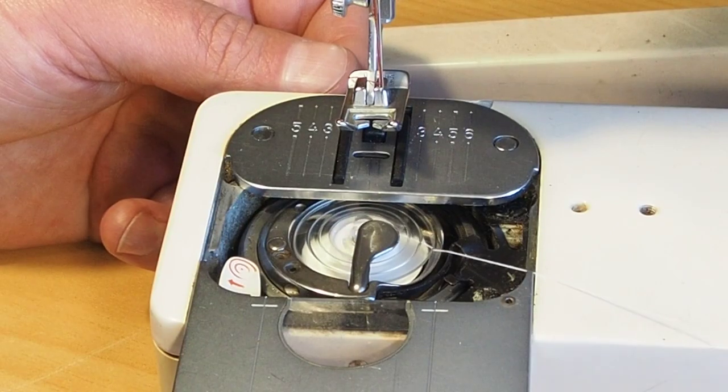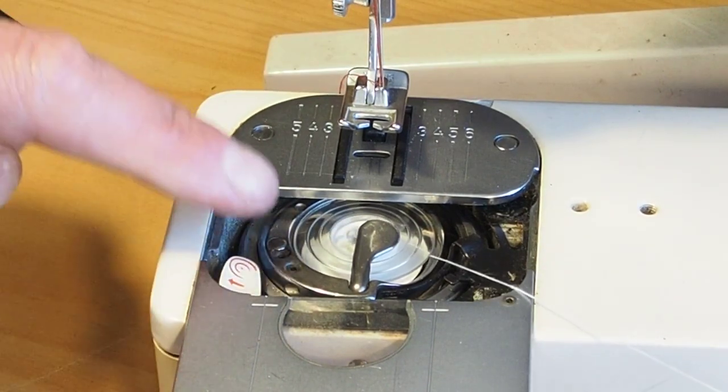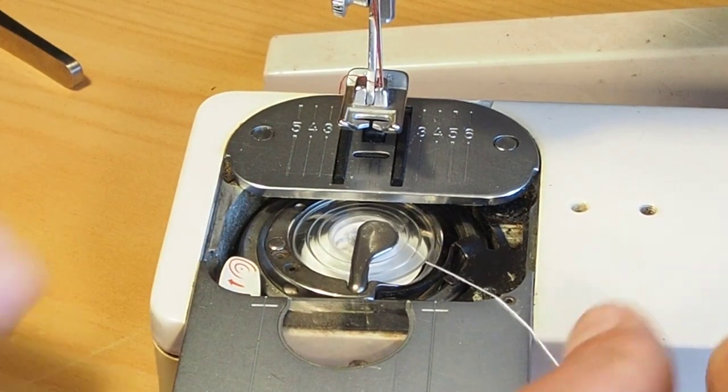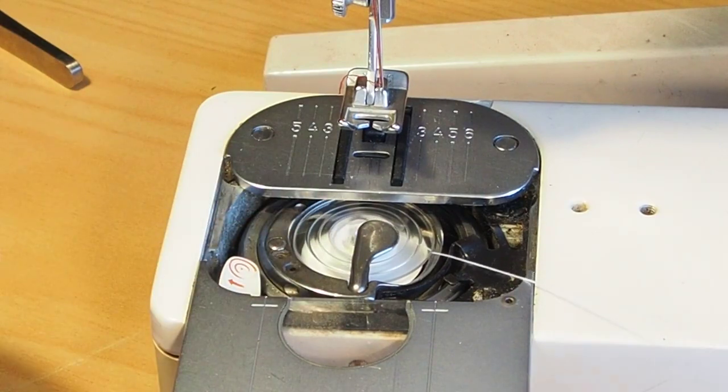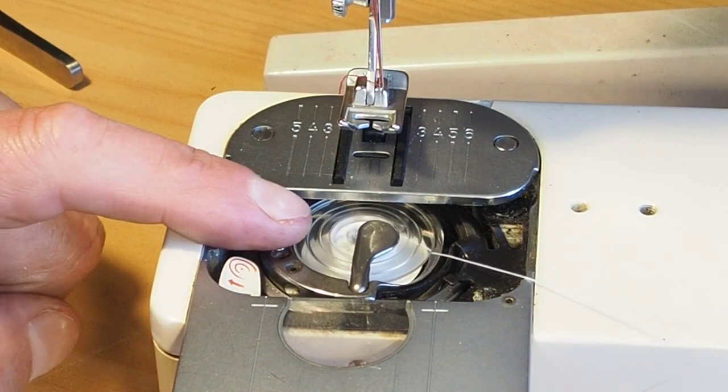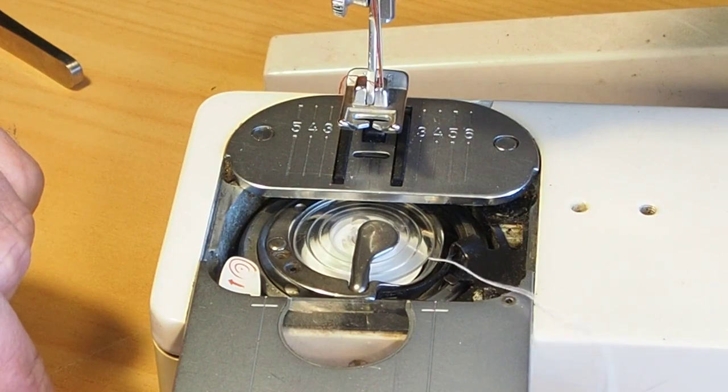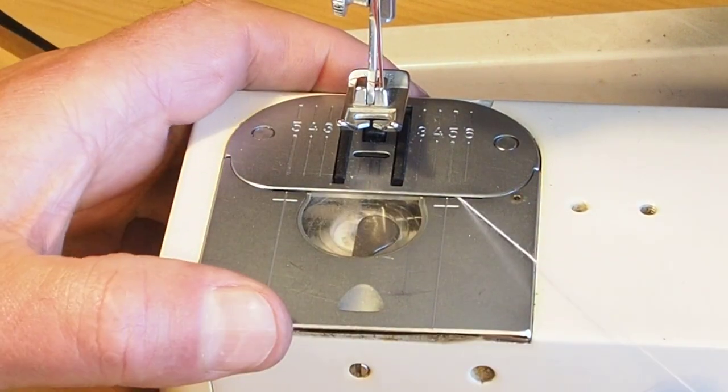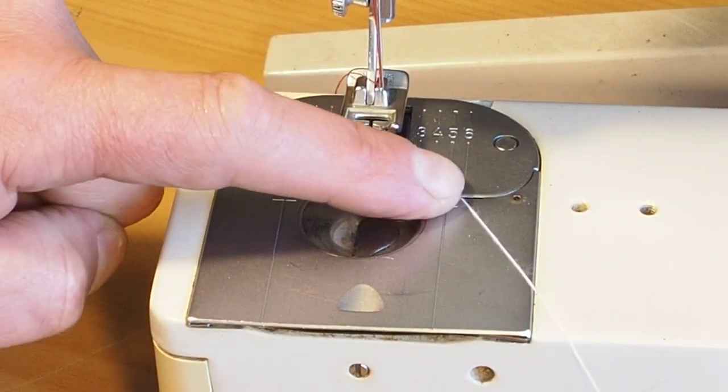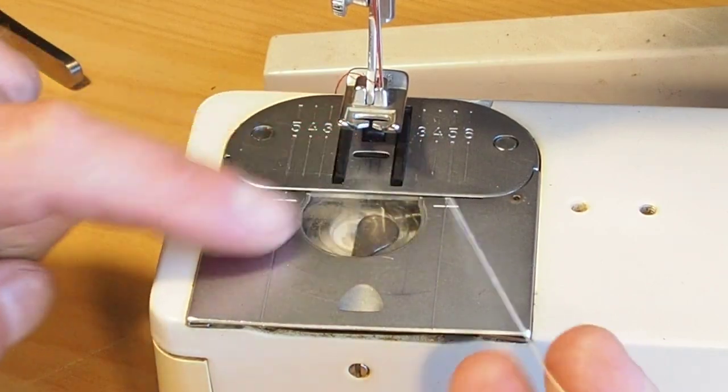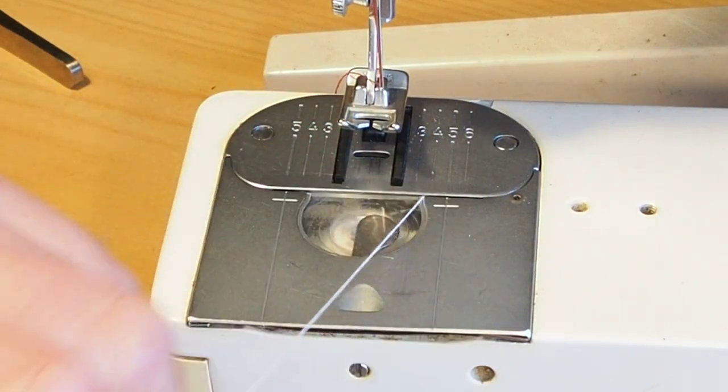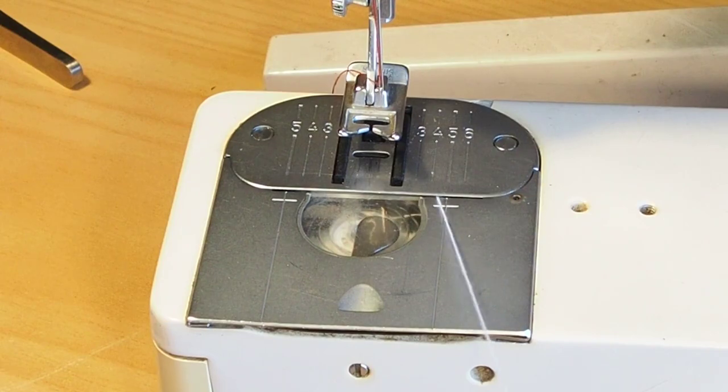A good thing to do while you're looking at this is pull the bobbin thread, and that should smoothly pull out nice and evenly with no snags. You can actually close the plate there. There's a little cutout between the two plates to allow the thread to come through without trapping.